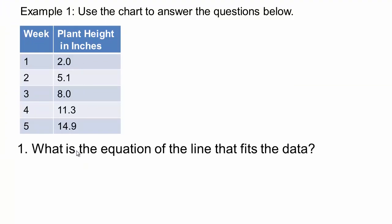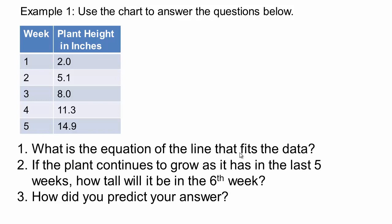So how can you answer the following questions then? What's the equation of the line that fits the data? If the plant continues to grow as it has in the last five weeks, how tall will it be in the sixth week? How do you predict your answers? So what we're going to do is a process called fitting a line to this data. You have to be careful because not all data can have lines that fit to it because they're not necessarily linear relationships. So the first thing to do is to figure out whether going this route is a good idea or not.